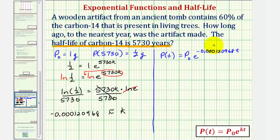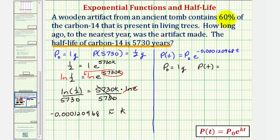Now we can finally answer the question: if 60% of carbon-14 is present, how long ago was the artifact made? In this case, if p sub zero equals one gram, then p of t equals 60% as a decimal, which is 0.6 grams. Now that we have k, we can substitute for p sub zero and p of t and solve for t to the nearest year.